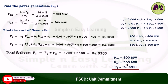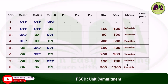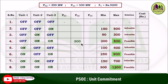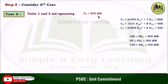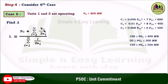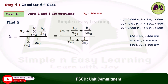Substituting these values in the unit commitment table for case 4: pg2 equals 300, pg3 equals 500, and the total fuel cost is 9200. Step four: consider the sixth case. In case 6, unit 1 and unit 3 are operating. The demand is 800 megawatt. Find lambda using the formula: pd plus b1 over 2a1 plus b3 over 2a3, divided by 1 over 2a1 plus 1 over 2a3. Substituting values from the cost functions gives lambda equal to 12.057.